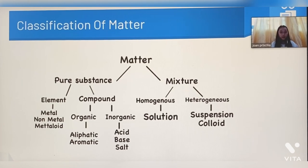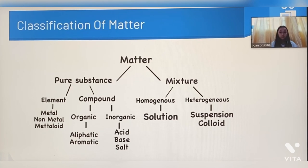Pure substance can be divided into two parts, and that is element and compound. Element consists of metal, non-metal, and metalloid. Compound can be divided into two parts, and that is organic and inorganic compound.